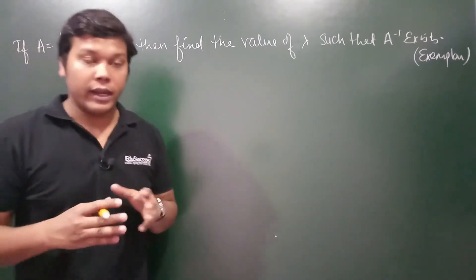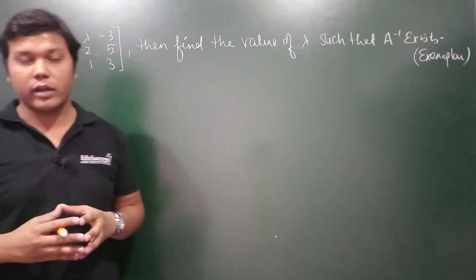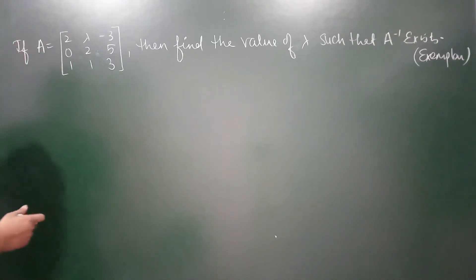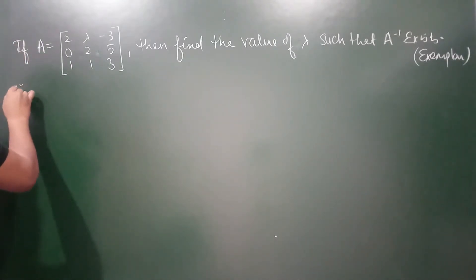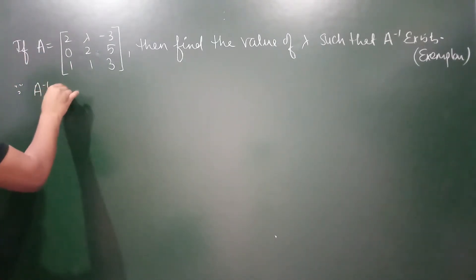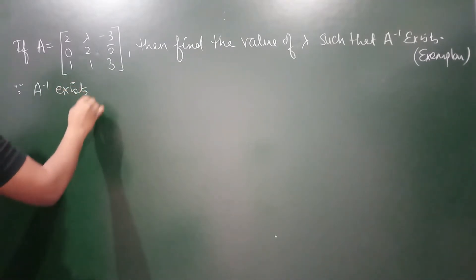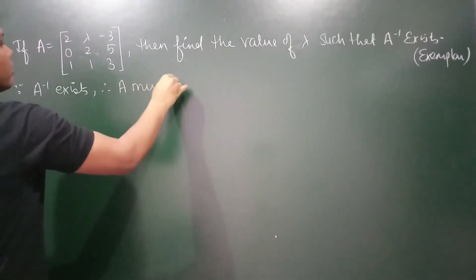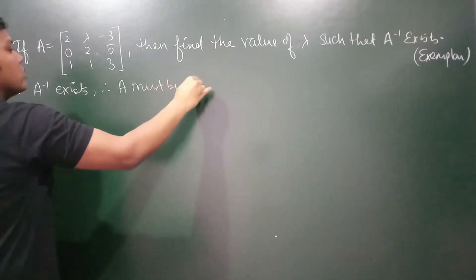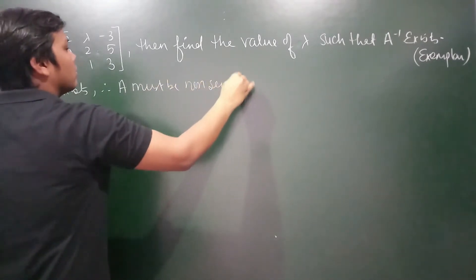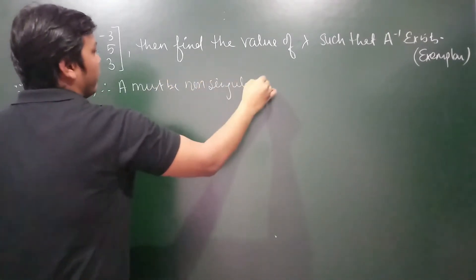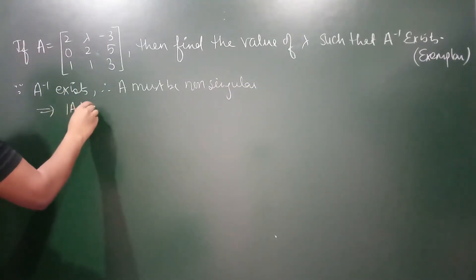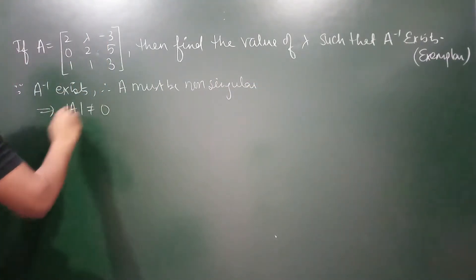हम सबको पता है कि A inverse कब exist करता है जब वो matrix हमारी non-singular matrix हो. So since A inverse exists, therefore A must be non-singular. What does it mean? It means that this implies that determinant of A should not be equal to 0.